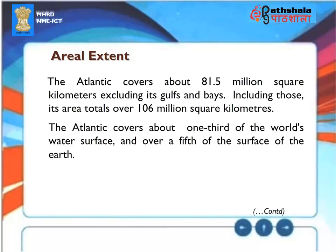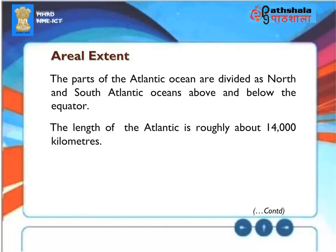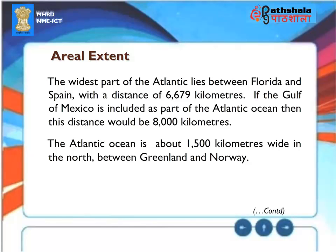The Atlantic covers about 81.5 million square kilometers, excluding its gulfs and bays. Including those, its area totals over 106 million square kilometers — about one-third of the world's water surface, and over a fifth of the Earth's surface. The Atlantic is divided as North and South Atlantic Oceans above and below the equator. Its length is roughly 14,000 kilometers. The widest part lies between Florida and Spain, at 6,679 kilometers — or 8,000 kilometers if the Gulf of Mexico is included.